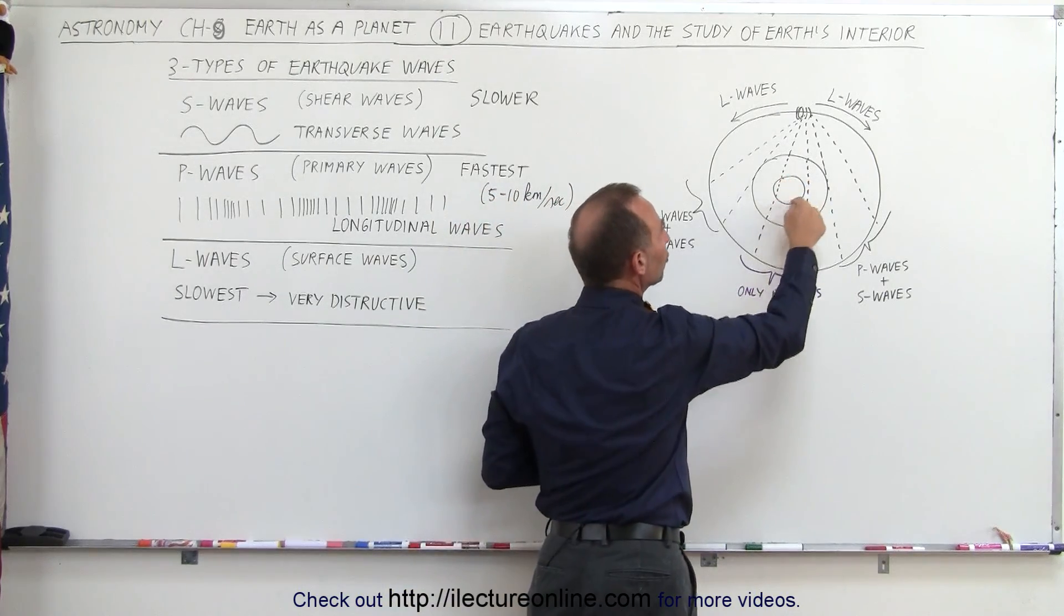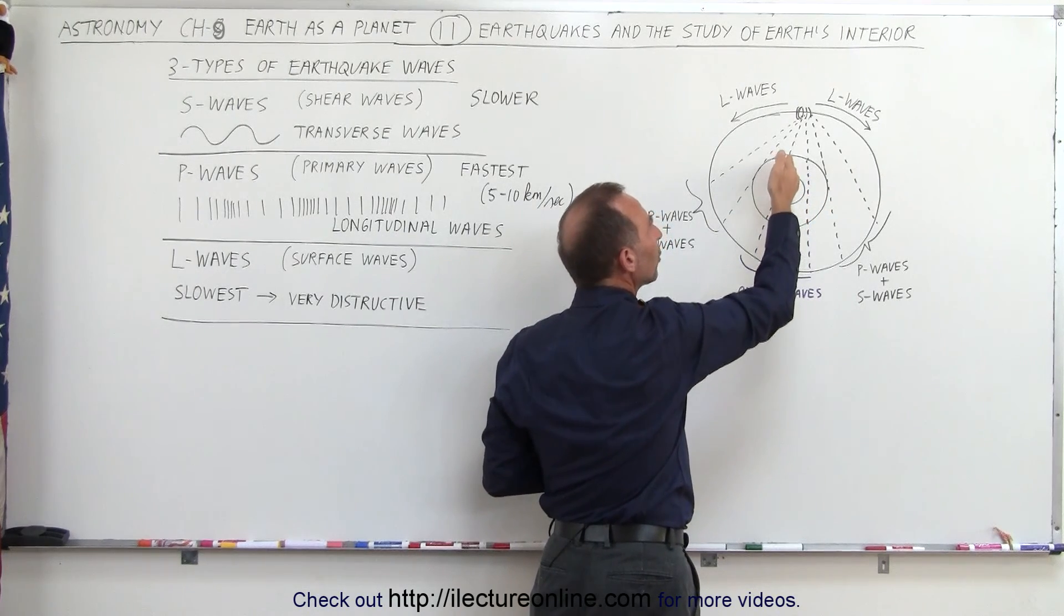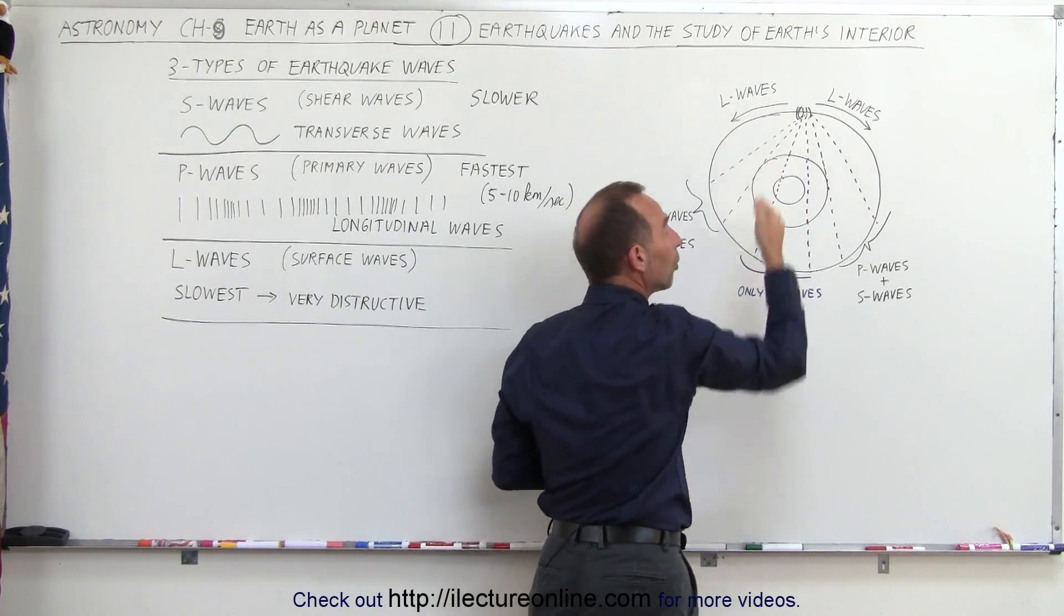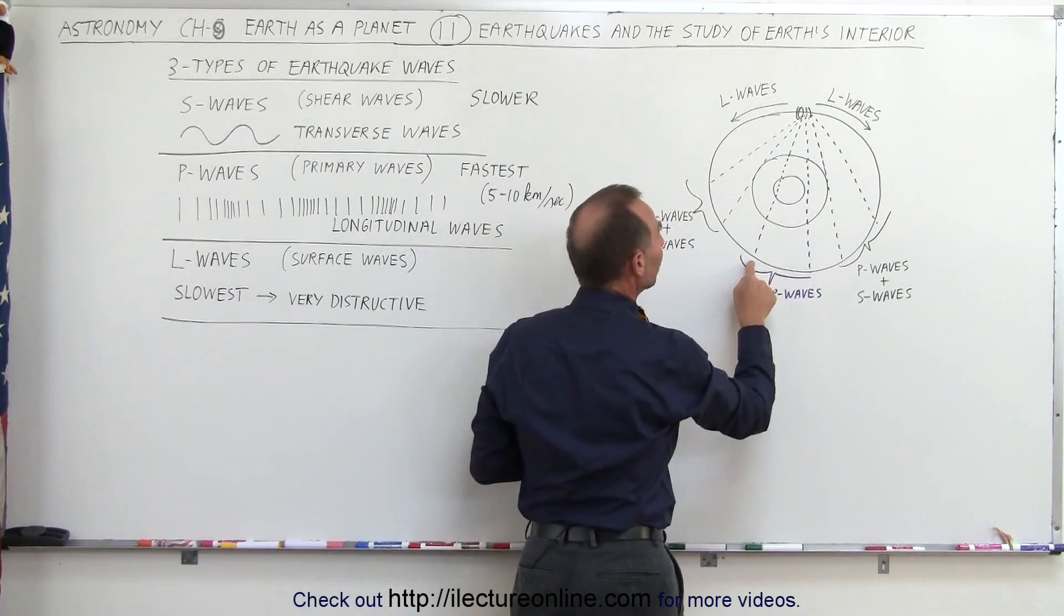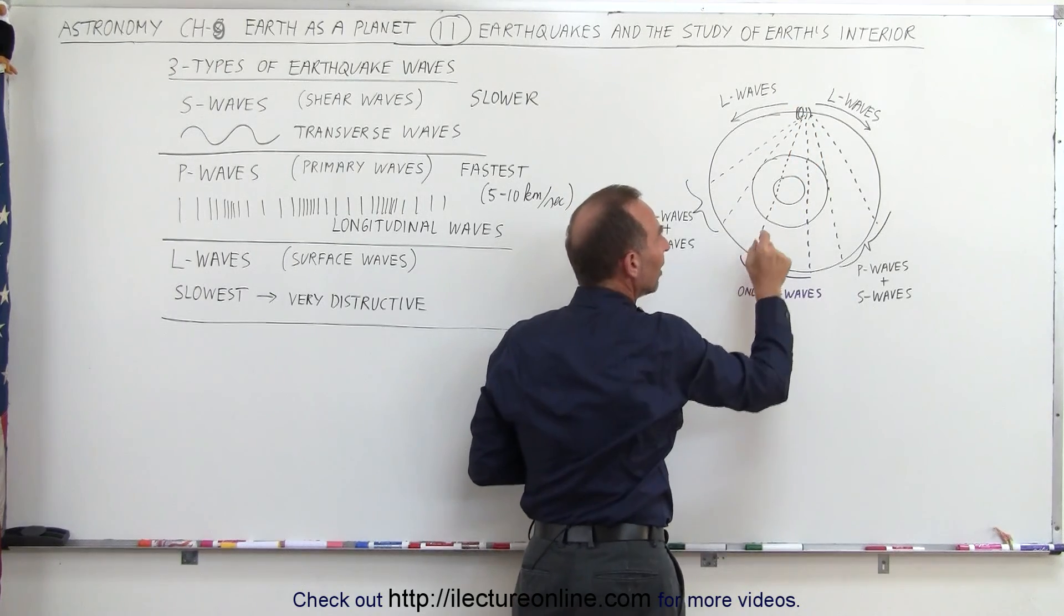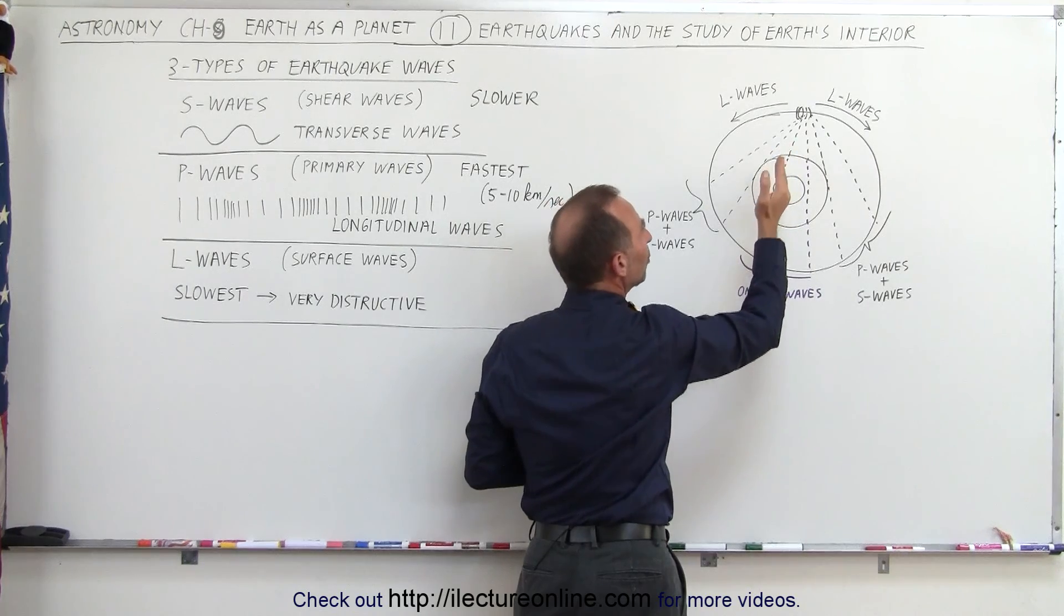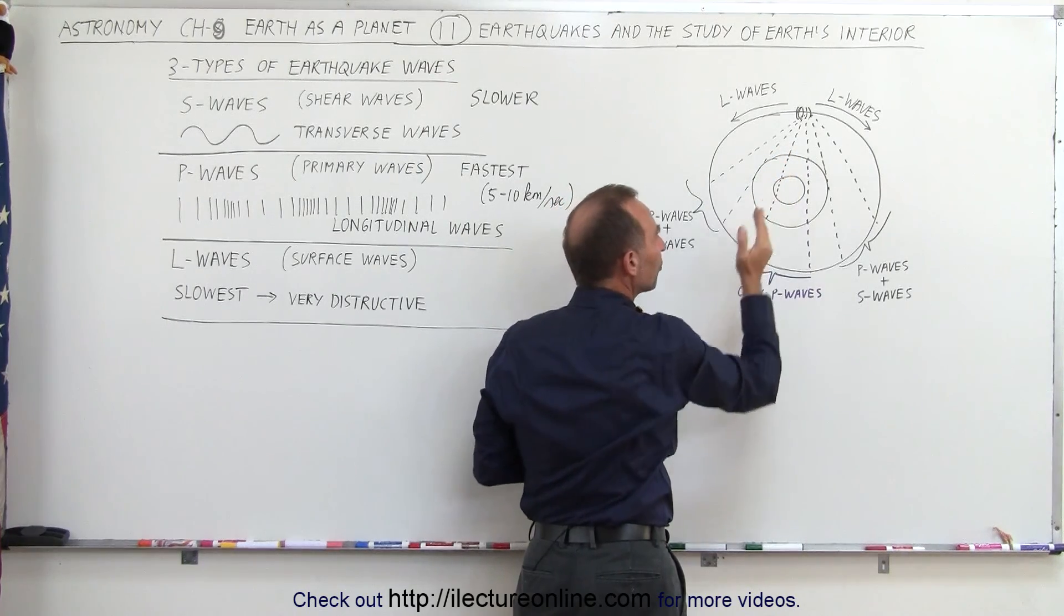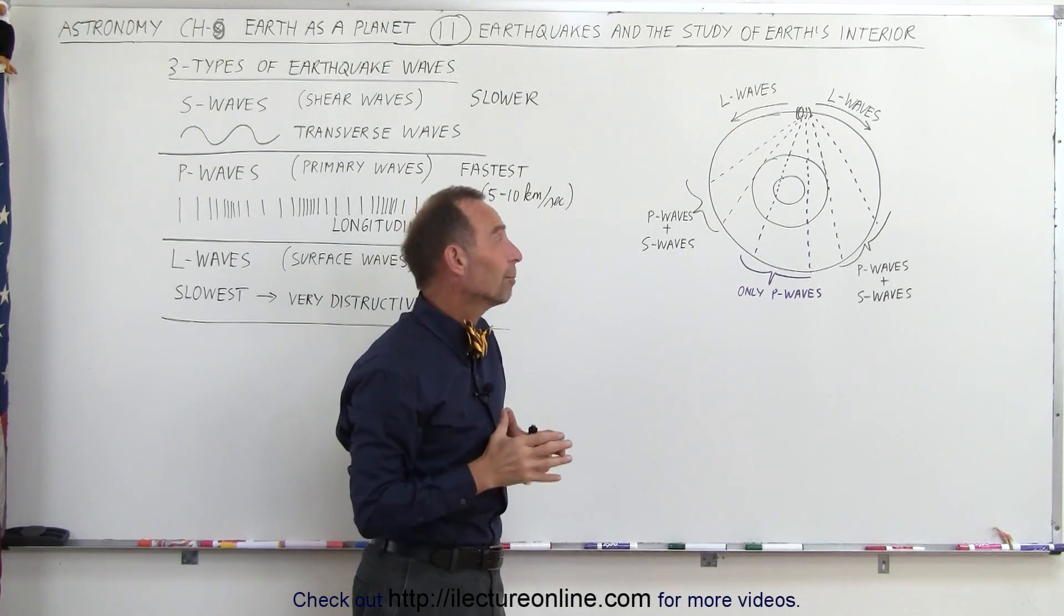The reason why we know that there's a solid core right here at the center of the Earth is because the speed at which the waves travel through the liquid portion and the solid portion is different. So when we measure the time that it took for the waves to travel these distances, depending upon what portion of the travel was through the liquid portion and what portion was through the solid portion, from that we can figure out how big the liquid portion and the solid portion had to be.